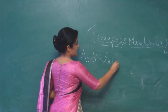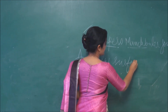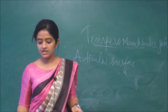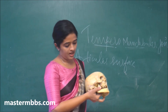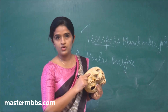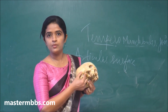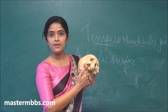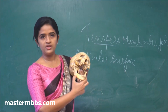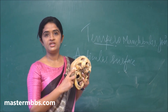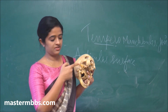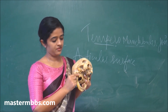The articular surface of the temporomandibular joint — whenever we talk about a joint there will be an upper part and a lower part. The upper articular surface is formed by the temporal bone, which you can see here. The condyle of the mandible forms the lower articular surface.